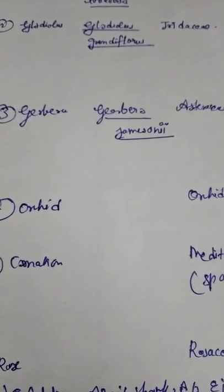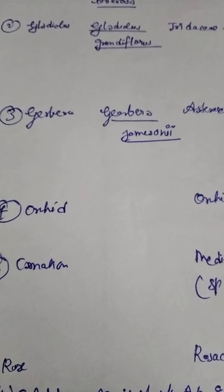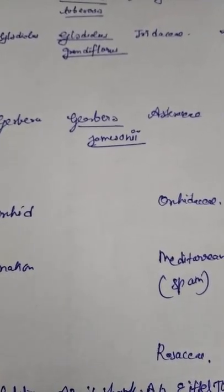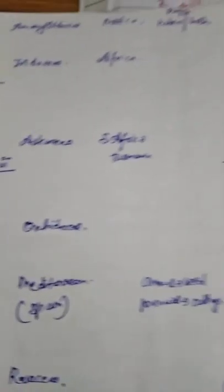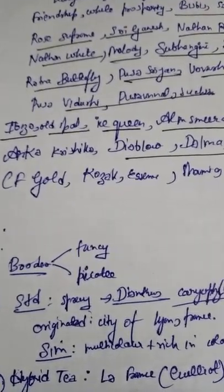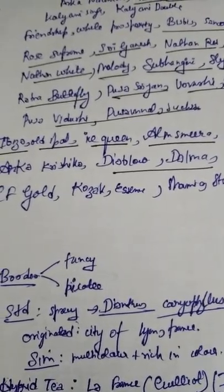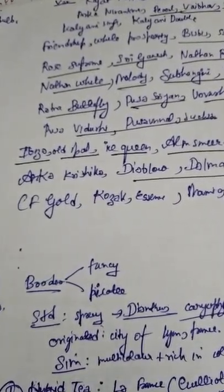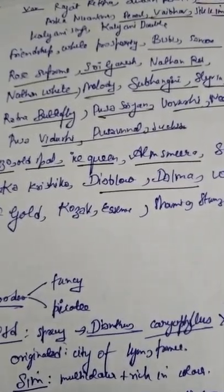Gerbera is also an important flower crop, named after naturalist T. Gerbera. Botanical name is Gerbera jamesonii, family Asteraceae, origin South Africa. Important varieties include Ibiza, Old Spot, Ice Queen, Almsira, Sangria, Harka Krishika, Diablo, Dalma, Winter Queen, CF Gold, Kazak, Essence, Shamya, and Stencila.